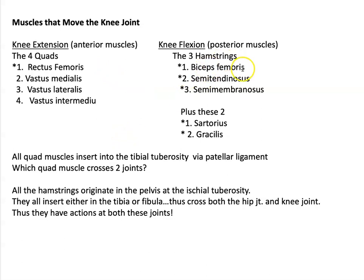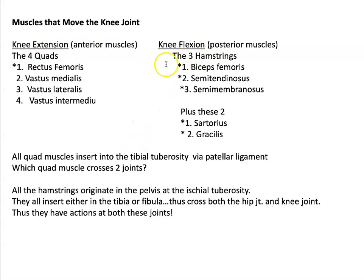The hamstring muscles are posterior muscles — they are on the opposite side of your leg from the knee extension muscles. The four hamstring muscles are all antagonists to the four quad muscles for knee extension and flexion. All hamstring muscles originate in the pelvis at the ischial tuberosity, and all hamstring muscles insert either in the tibia or the fibula. That's why they all have little stars next to them — they all cross two joints: the hip joint and the knee joint.